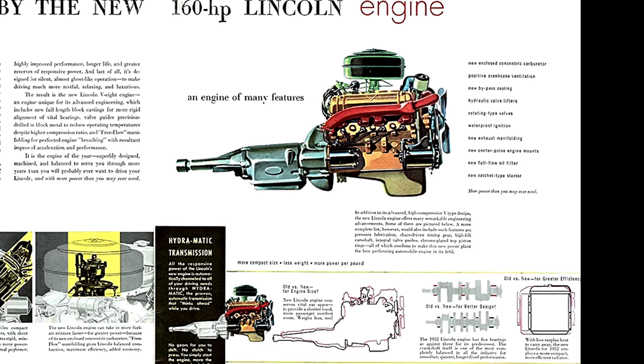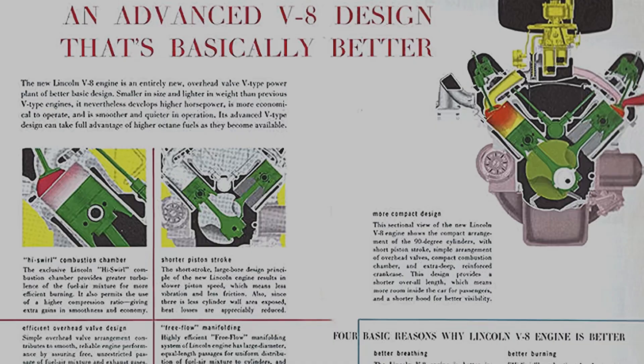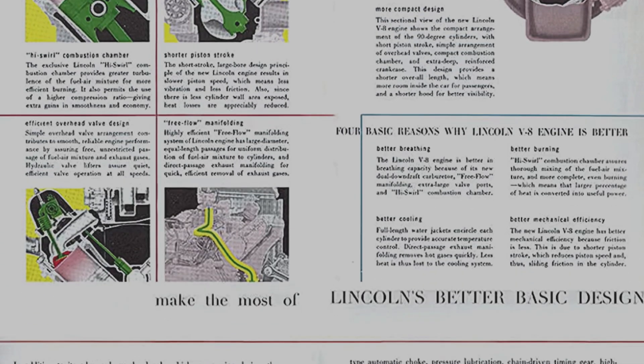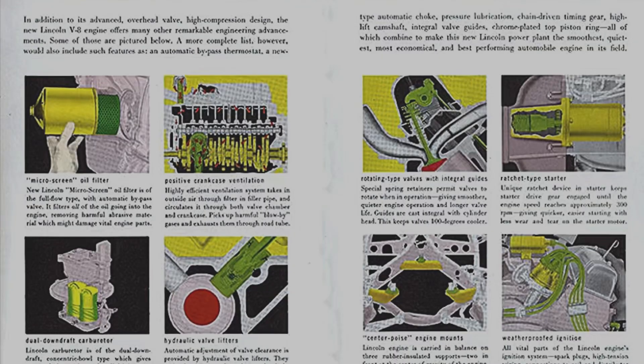The Lincoln Y-Block featured an overhead valve layout, five main bearings, push rod with shaft-mounted rocker arms, hydraulic valve lifters on Lincoln Y-Blocks — while the Ford HD series used solid valve lifters for most of their engines — a high swirl combustion chamber which provides greater turbulence of the fuel-air mixture for more efficient burn, shorter strokes, and a full-flow spin-on oil filter.